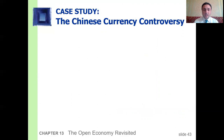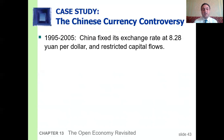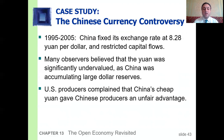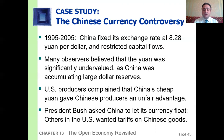Case study: the Chinese currency controversy. From 1995 to 2005, China fixed its exchange rate at 8.28 yuan per dollar and restricted capital flows. Many observers believed the yuan was significantly undervalued, as China was accumulating large dollar reserves. U.S. producers complained that China's cheap yuan gave Chinese producers an unfair advantage. President Bush asked China to let its currency float, while others in the U.S. wanted tariffs on Chinese goods.